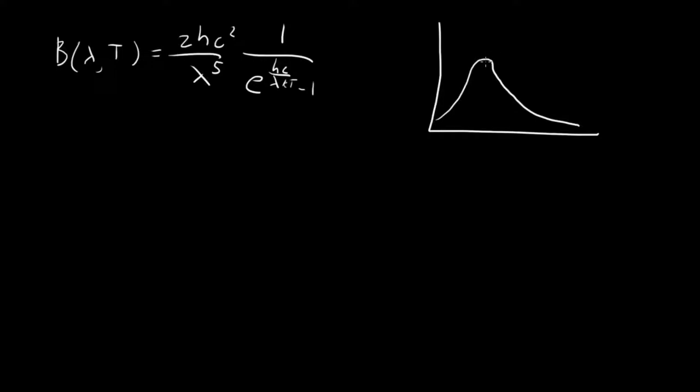The way that we derive Wien's law is what you always do in calculus. If we want to find what this peak is, we take the derivative of our distribution with respect to lambda, set it equal to zero, and find what lambda satisfies that. So we want to take db d lambda equal to zero.